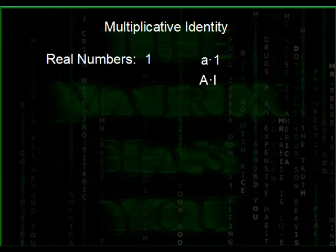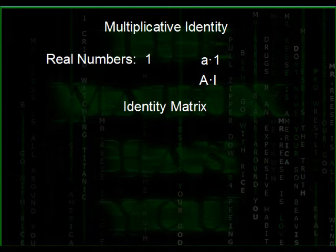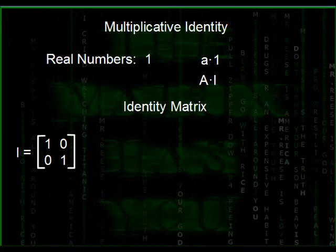For a matrix, we use I to denote that. So matrix A times I would equal to A. I representing the identity matrix. The identity matrix is a square matrix. A 2 by 2 matrix would have ones across the diagonal and zeros everywhere else.